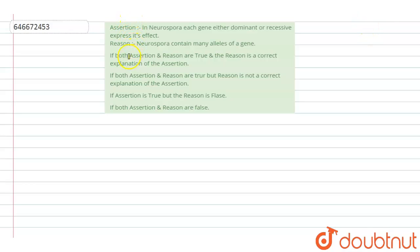Question is about assertion-reason. Assertion is: In Neurospora, each gene, either dominant or recessive, expresses its effect. Reason is: Neurospora contains many alleles of a gene. So we have to find out whether both are true or false, and if it is true, reason is correct explanation of assertion or not.